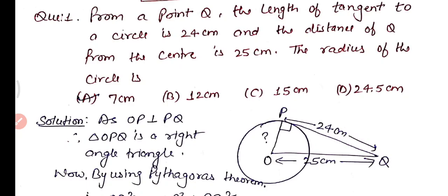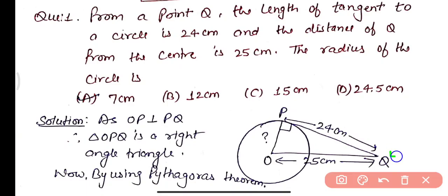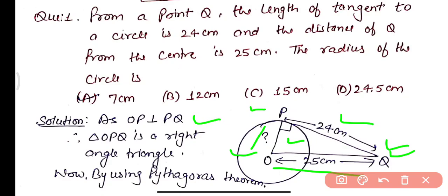There is a point Q given which is on the exterior of the circle. Point Q is given, and from point Q, the length of tangent QP is equal to 24 centimeters. We are given the distance of Q from center O as 25 centimeters, and we need to find the radius of the circle, that is OP. As we know that the radius is perpendicular to the tangent at the point of contact, so OP will be perpendicular to PQ.